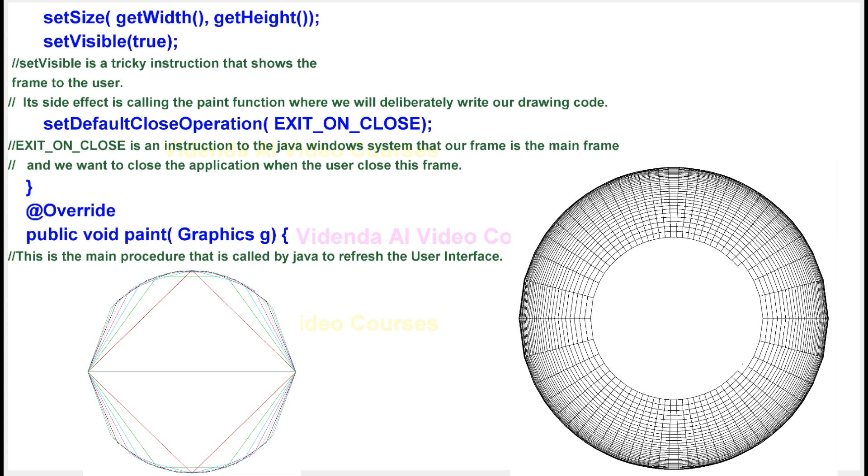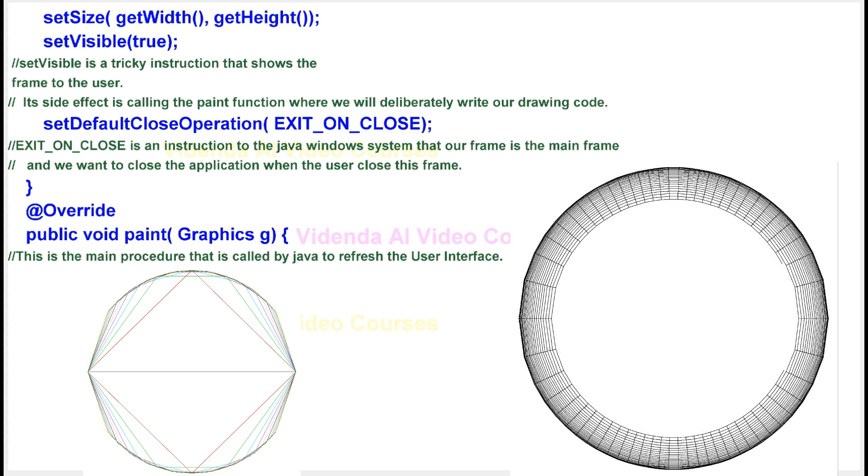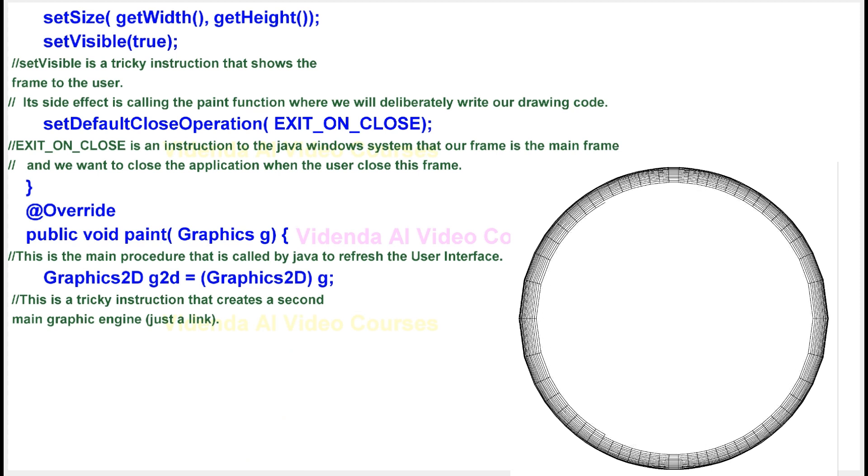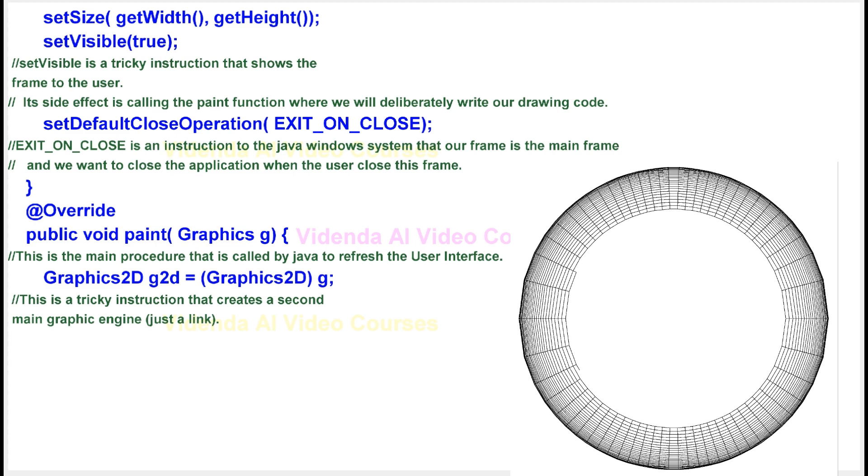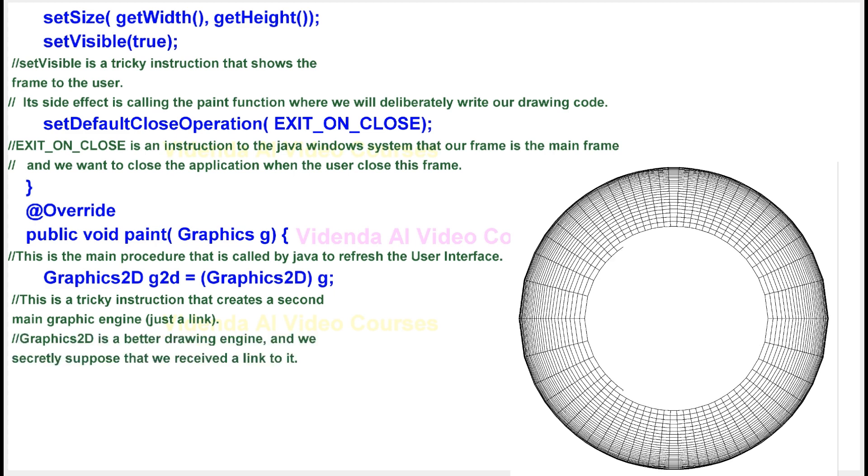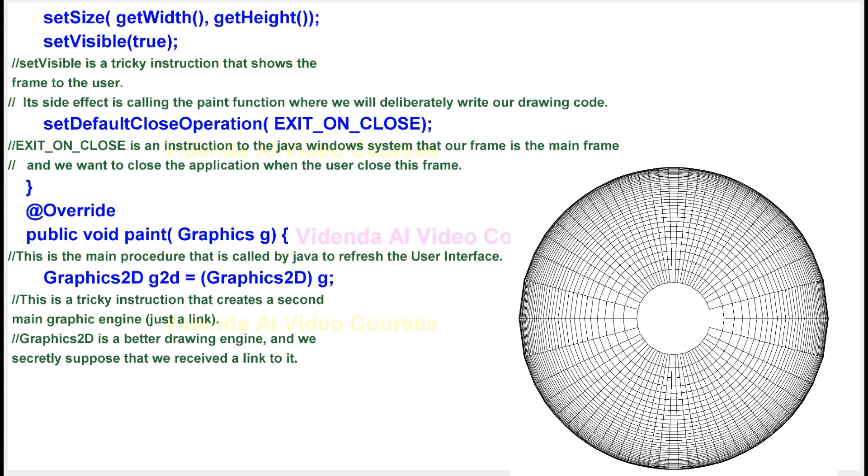This is the main procedure that is called by Java to refresh the user interface. This is a tricky instruction that creates a second main graphic engine, just a link. Graphics 2D is a better drawing engine, and we secretly suppose that we received a link to it. This instruction will fail on old Java systems.